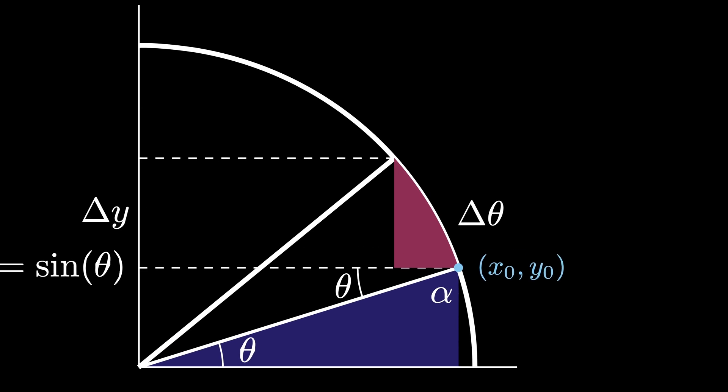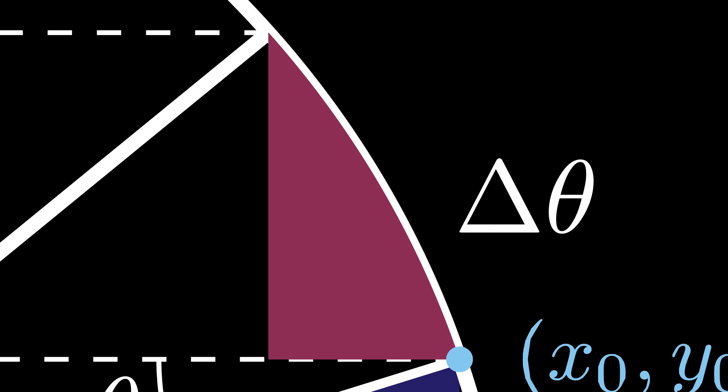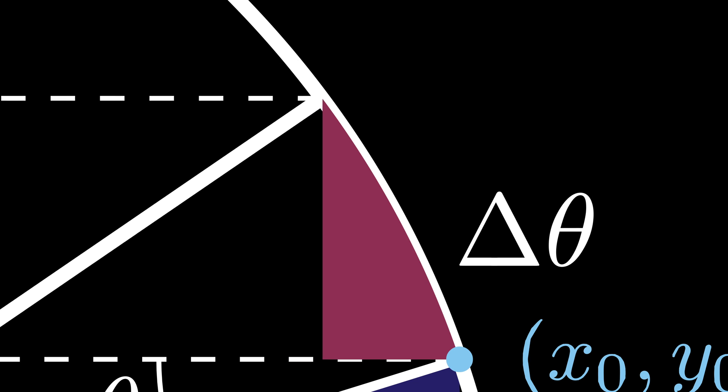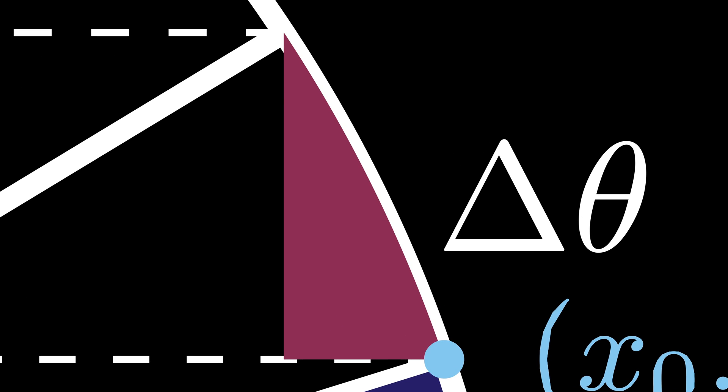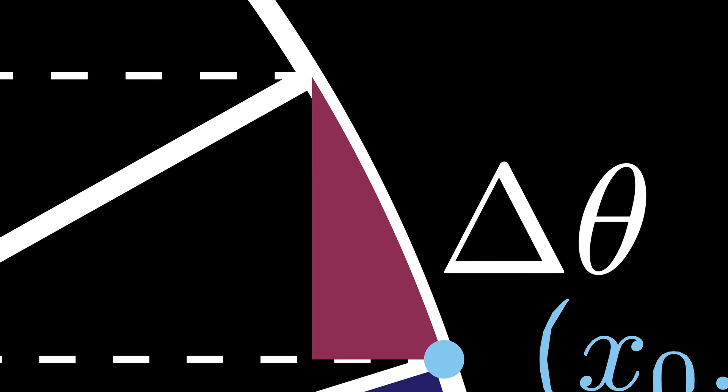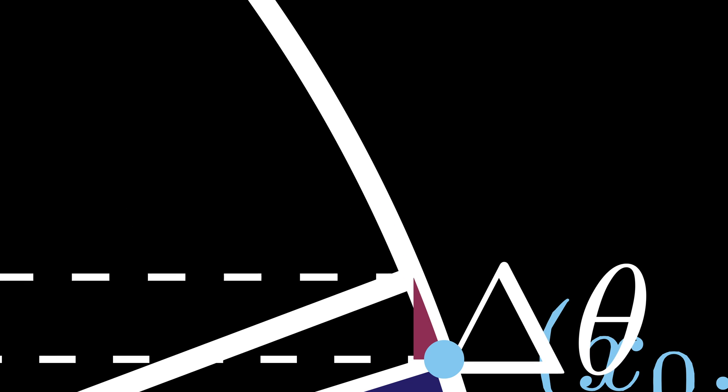Notice that the triangular wedge is not actually a triangle as it has a curved side length. But if we start shrinking delta theta, as we do here, we see that the triangular wedge region starts to become more and more like an actual triangle. And sure enough, the smaller that we shrink delta theta, the more this triangular wedge region resembles an actual triangle.